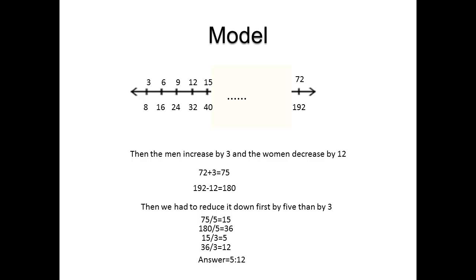Then we knew that the men increased by 3, and the women decreased by 12, which gave us 75 and 180. We reduced it down by dividing it first by 5, then by 3, which gave us our answer, 5 to 12.